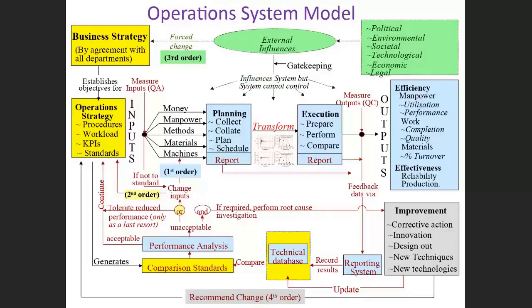This is an overview of what operations management entails with this operations system model. First, we've got a business strategy — everything starts with a business strategy. Take for example an organization like Shell Mobile, a large multinational organization with several business units across the world. The business strategy has to come from headquarters; for instance, this year we want to reduce our carbon footprint.